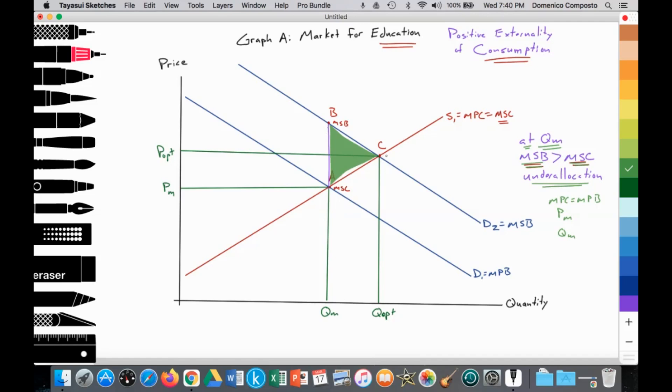Social optimum would thus be achieved where marginal social cost equals marginal social benefit, which would provide a price that's optimal at P-opt and the optimal social quantity at Q-opt. Thus, at Q-opt, allocative efficiency is achieved. Marginal social cost equals marginal social benefit.